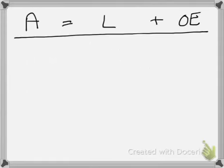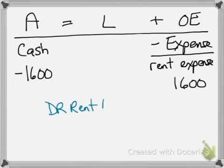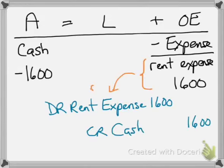The fourth transaction was that we paid sixteen hundred dollars for rent. The rent expense account balance is going up and we have less cash, so we see a debit to rent expense and a credit to cash for sixteen hundred dollars. It's important to remember that the negative is in front of the expense category, so it's not a decrease in the expense account — it's an increase — but expenses have a decreasing effect on the value of the business.